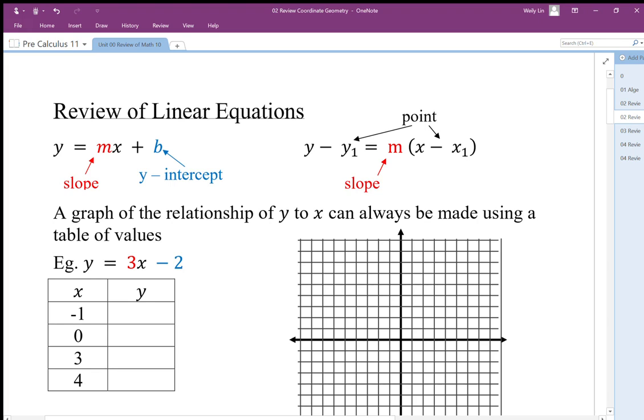When we look at linear equations or linear relationships, there are actually three forms. The two forms we focus on are the slope-intercept form, because this form gives us the slope and the intercept.